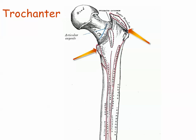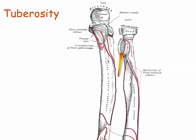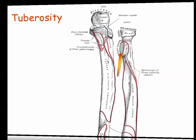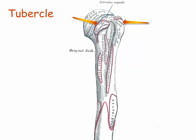A trochanter is kind of like a huge epicondyle — a very large bump for muscle attachment, larger than either a tubercle or tuberosity. Trochanter literally means runner. A tuberosity is an oblong raised bump, usually for muscle attachment; it may also be called a tuber. A small tuberosity is called a tubercle — the word part tuber literally means bump or lump. A tubercle is a small oblong bump, and tubercle literally means small bump or small lump.